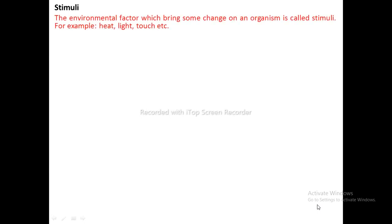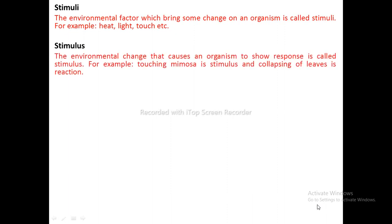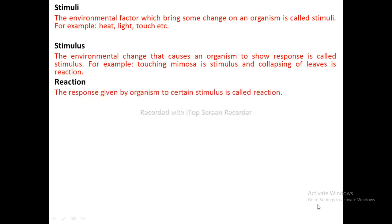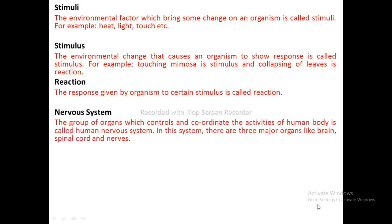Stimulus: The environmental factor which brings some change on an organism is called stimulus. For example, heat, light, touch, etc. The environmental changes that cause an organism to show a response is called stimulus. For example, touching a mimosa plant is a stimulus, and the collapsing of leaves is the reaction. Reaction: The response given by an organism to a certain stimulus is called reaction.